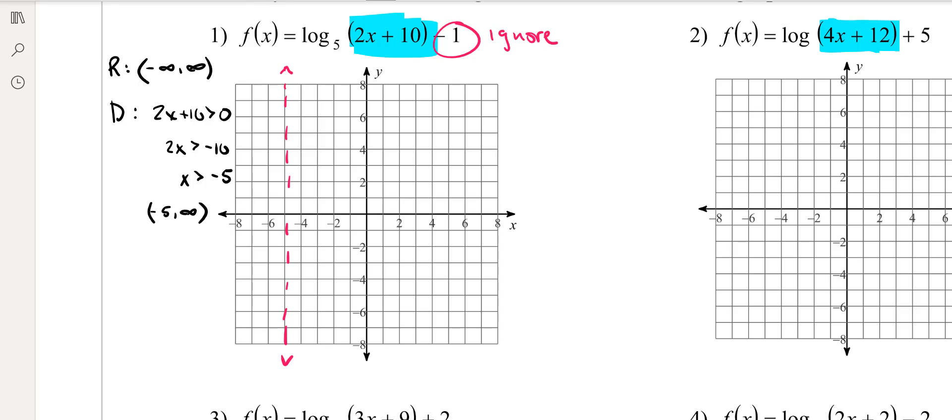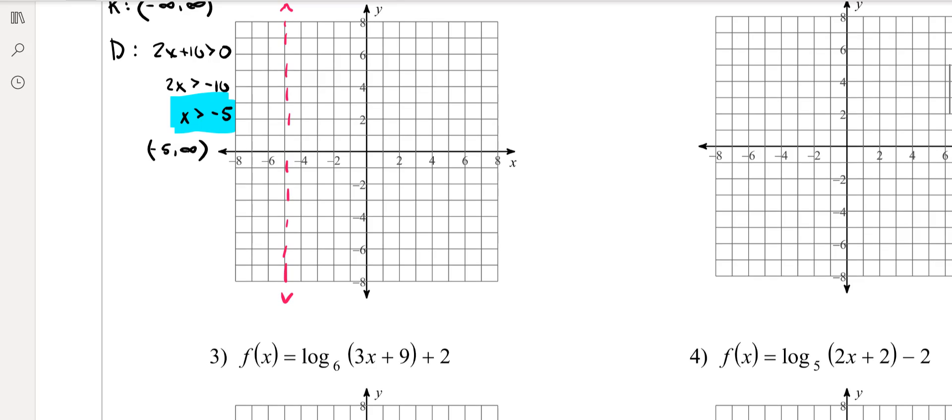And notice, whatever that is, that value right there, that is where the vertical asymptote is going to be. So you want to have that vertical asymptote at x equals negative 5. So that's going to be the first thing.